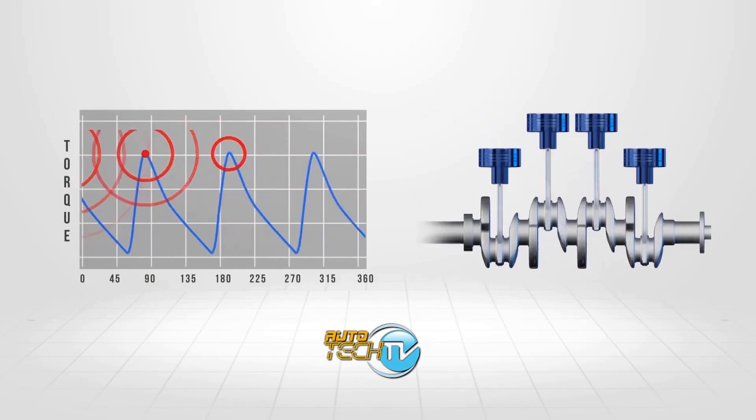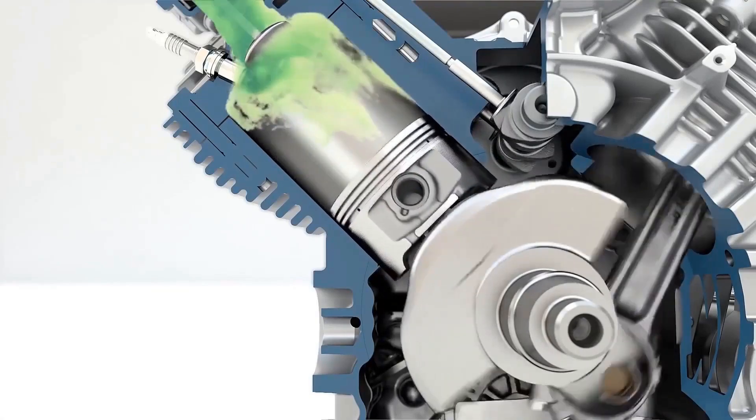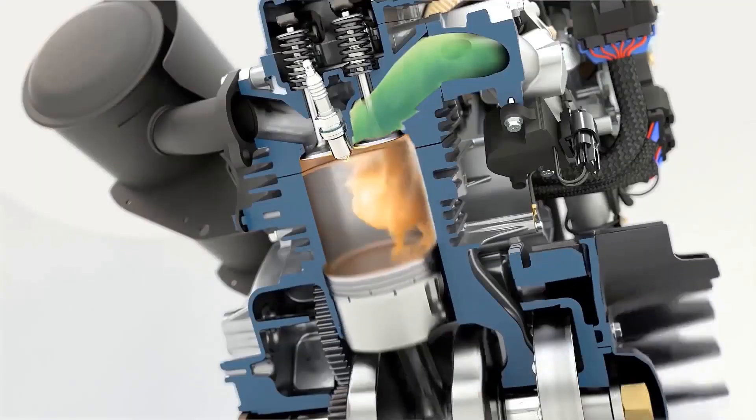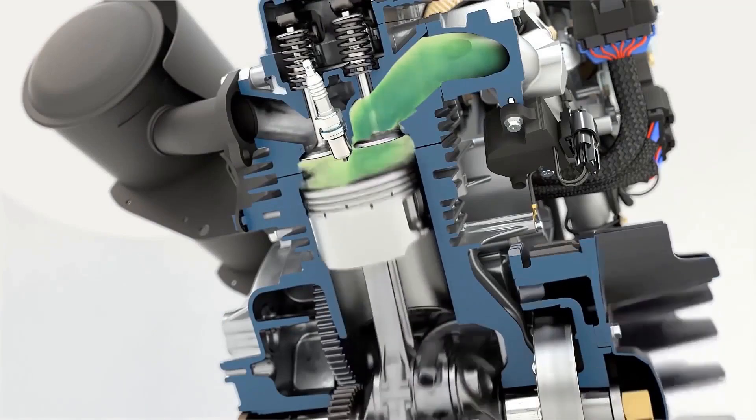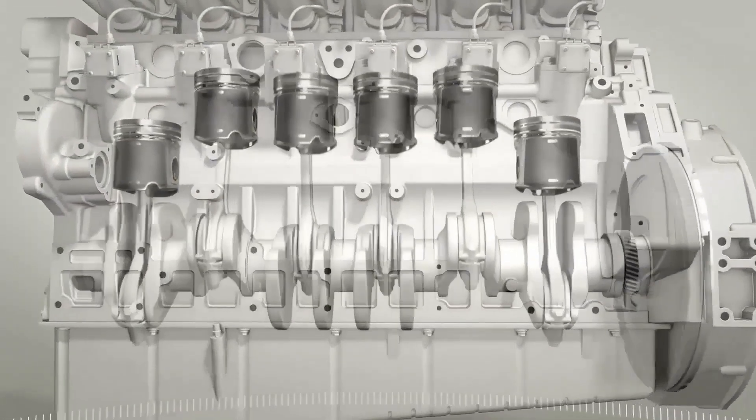The engine doesn't deliver power continuously like an electric motor; it delivers it in bursts, and these blows cause the pieces to be subjected to impact. Think of it this way: for every two turns of the crankshaft in a single cylinder engine, there's a combustion event. That combustion translates into a load that hits the piston, and that's a jolt.